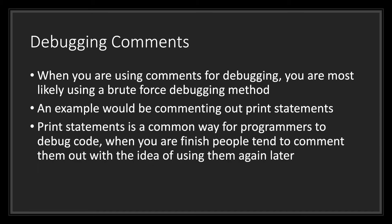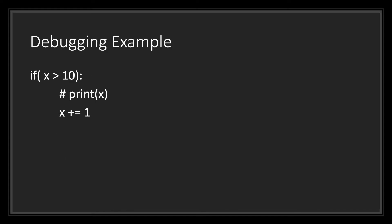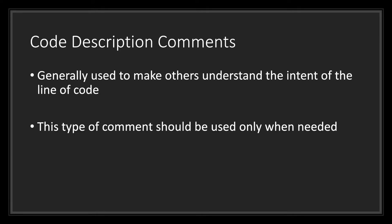The third type of comment you may find yourself using a lot is the debugging comment. When you are using comments for debugging, you are most likely using a brute force debugging method. An example would be commenting out print statements. Print statements are a common way for programmers to debug code. When you are finished, people tend to comment them out with the idea of using them again later. As you can see here, we have an if statement followed by a commented-out print statement where we want to see the value inside of x printed to the screen. You comment it out so it doesn't run during compile time.